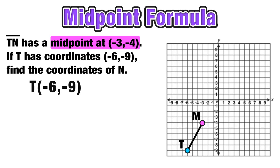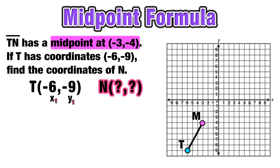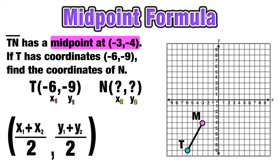Endpoint T has coordinates (-6, -9), which is our X₁, Y₁. Endpoint N has unknown coordinates, which will be our X₂, Y₂. We're still going to use the midpoint formula, but we know that it's going to equal the midpoint we already have: (-3, -4).